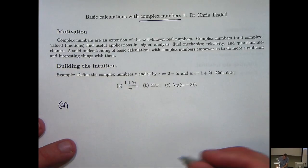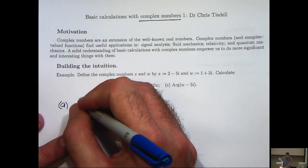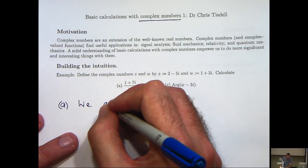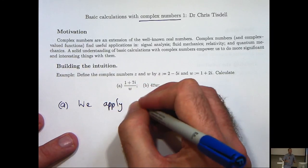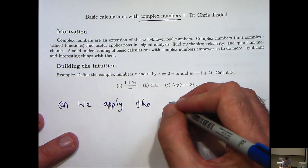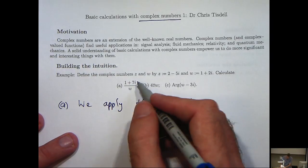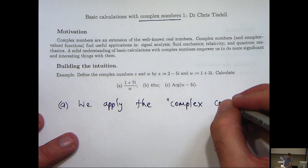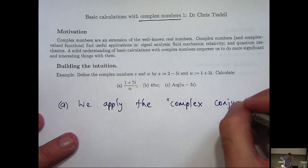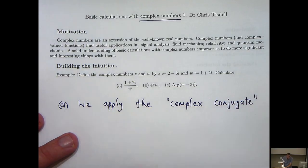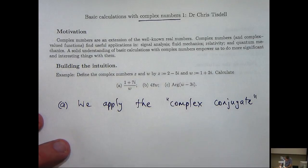Well the idea is to multiply the top and bottom of this expression by the complex conjugate of the denominator.